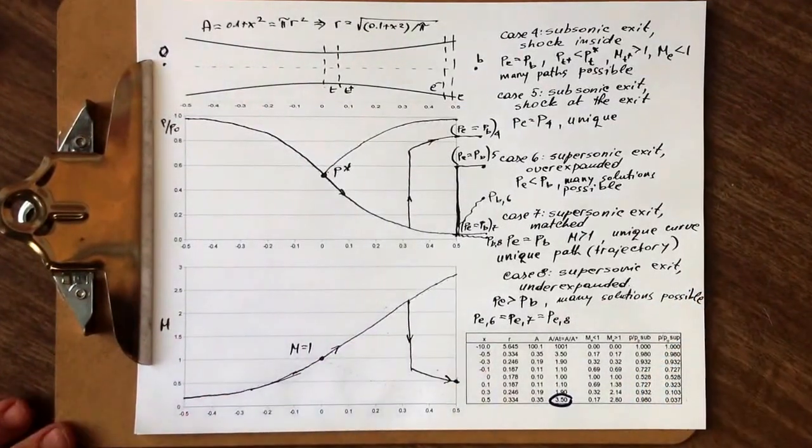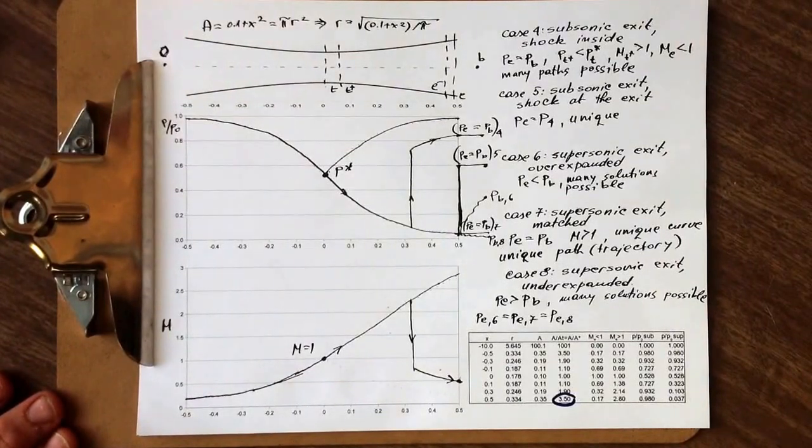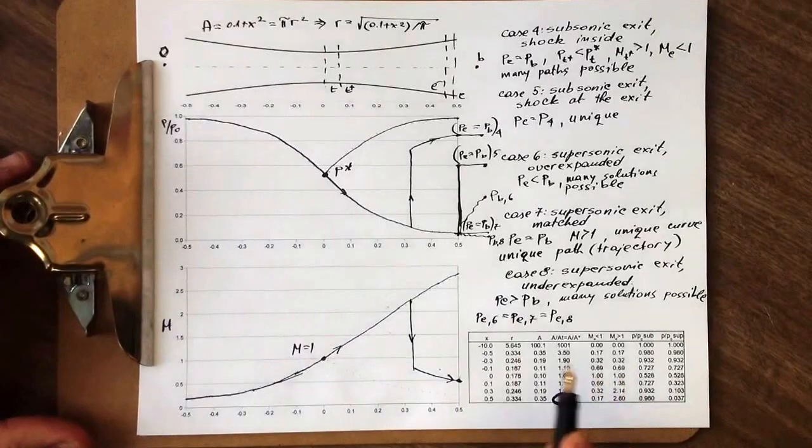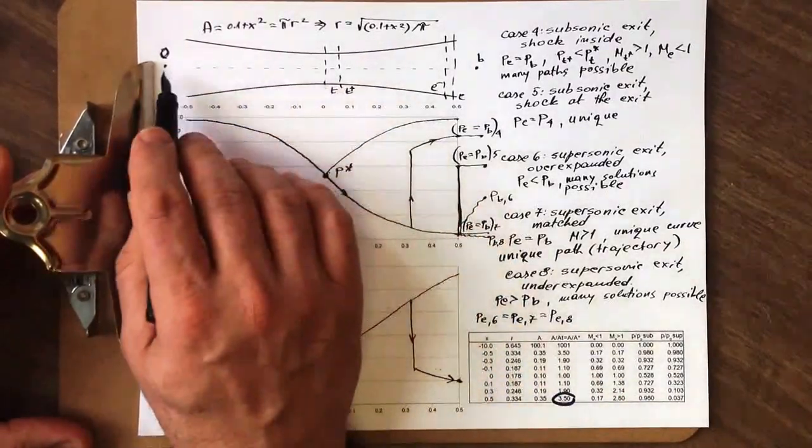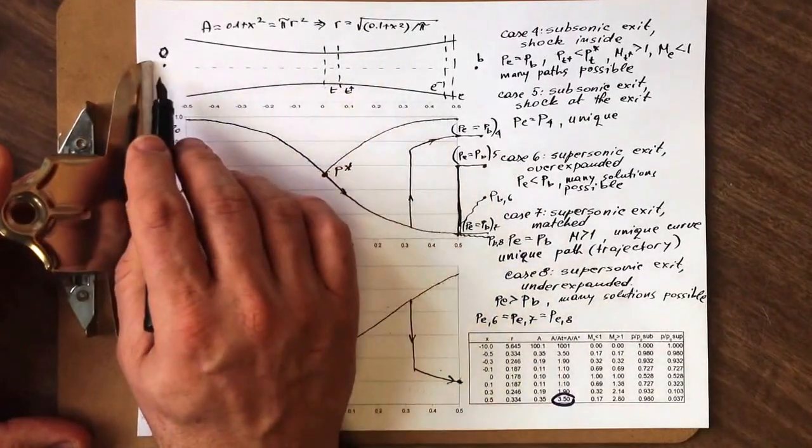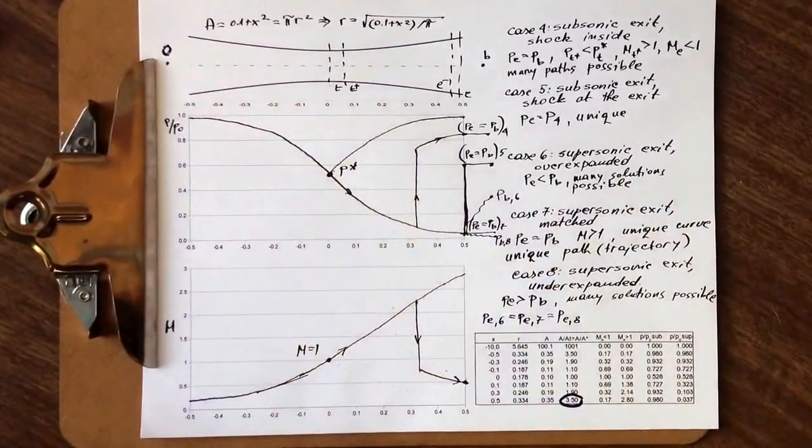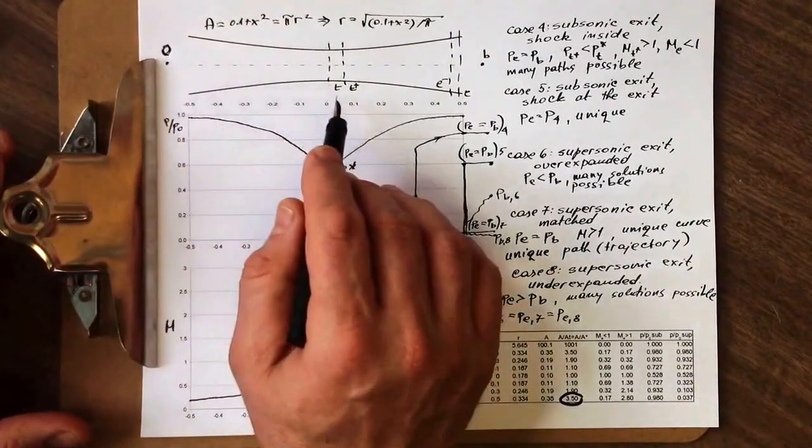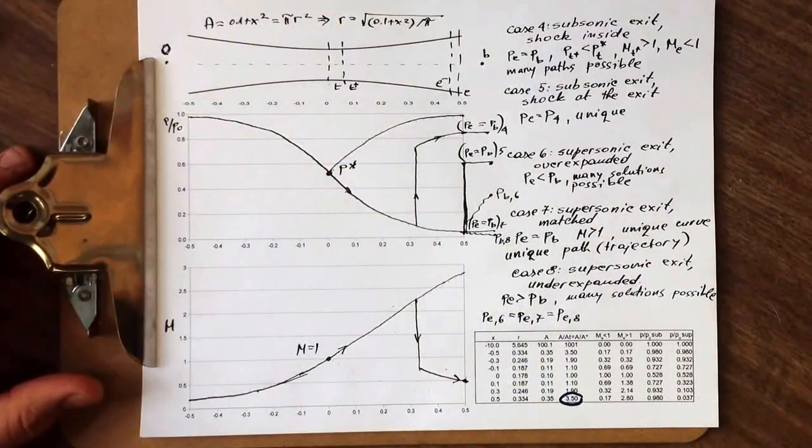So that covers basically all the regimes that can happen in the nozzle. And remember, we were only covering here the case where in the converging part of the nozzle, first part of the nozzle, we have acceleration starting from subsonic regime. There would be a whole series of cases similar to this if this were supersonic entrance, but this would go beyond the scope of this course.